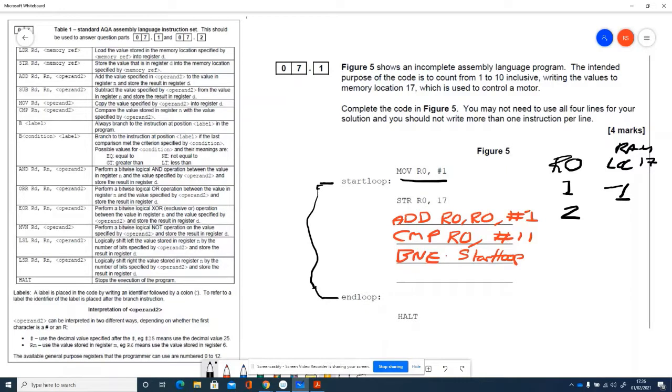So then we've compared register naught with 11 branch if not equal to well it's not equal to so we're going back to start loop and we're going to store what's in r0 into 17 so the ram location then takes the value of 2. We're going to add another one onto the register that becomes 3, compare again well it's not 11 so it's branch if not equal to we're going back up here.